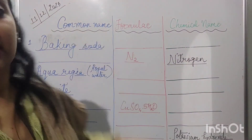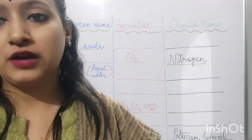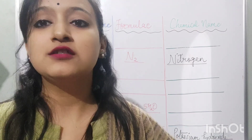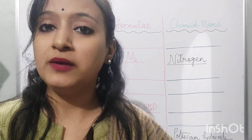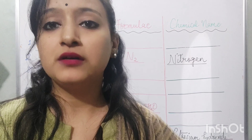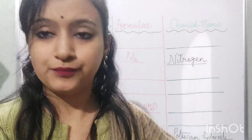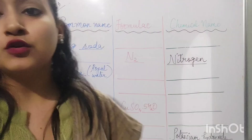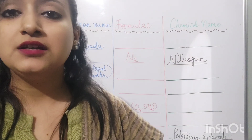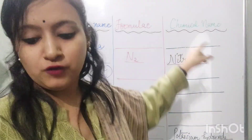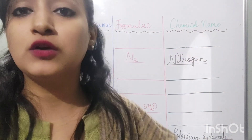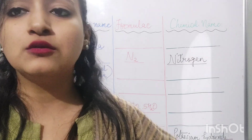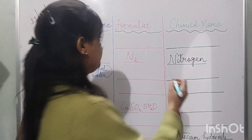In this very first video, I have come up with seven chemical compounds whose common names we will be discussing. So the first one — baking soda. Baking soda is the common name for the chemical compound sodium hydrogen carbonate, which is also known as sodium bicarbonate.